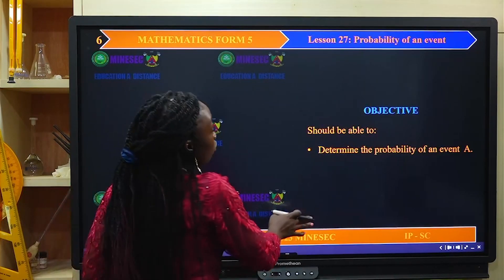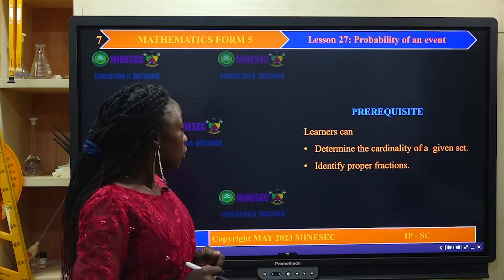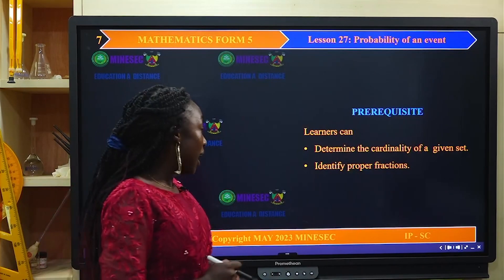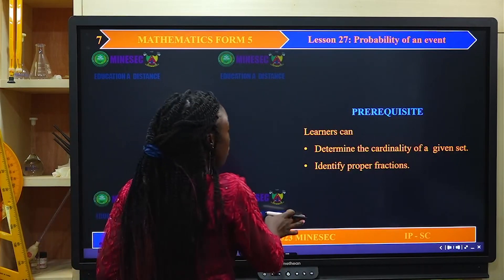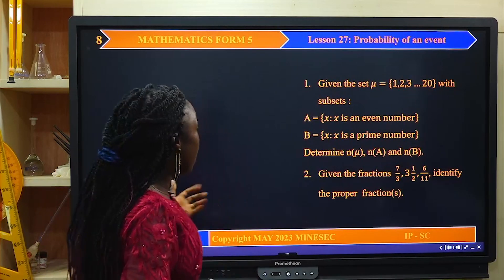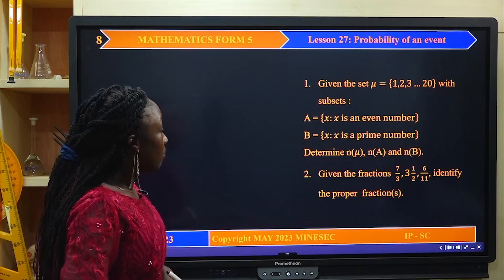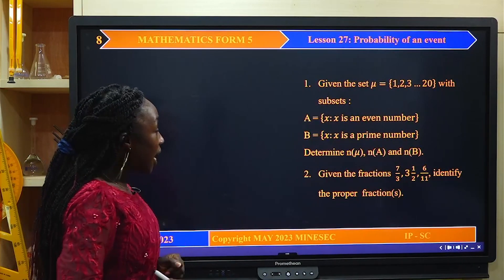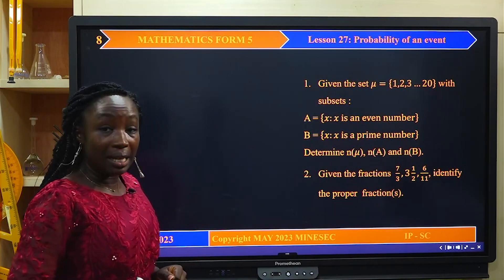For you to smoothly follow this lesson, you should already be comfortable determining the cardinality of a given set and identifying proper fractions. Let us have some questions to verify the prerequisite. Given the set U with subsets A equal to {x: x is an even number} and B equal to {x: x is a prime number}, determine the cardinality of U.